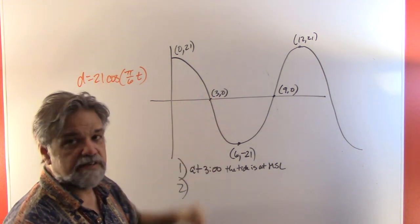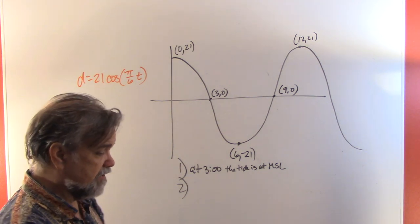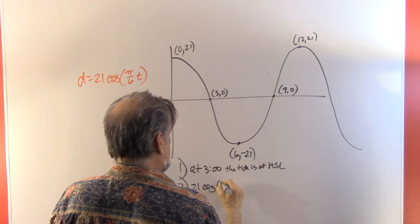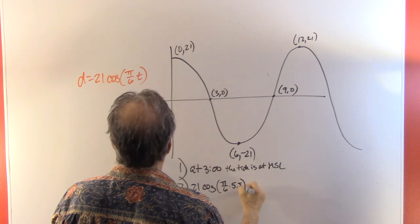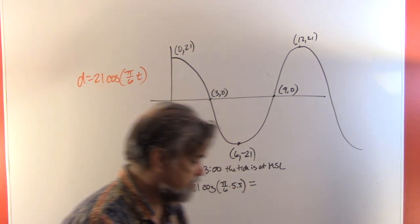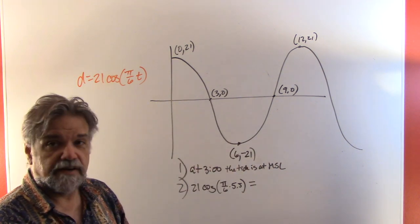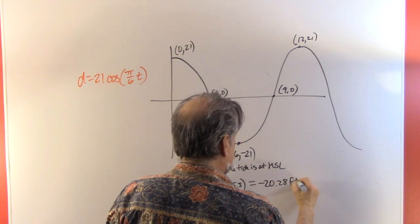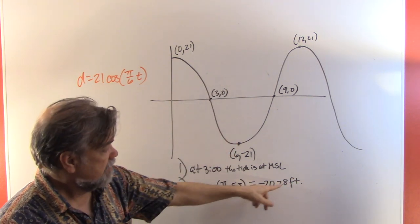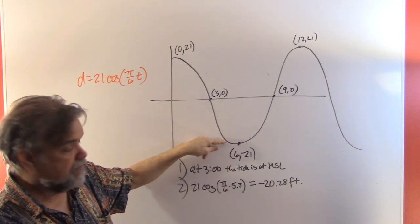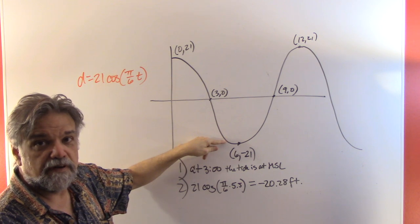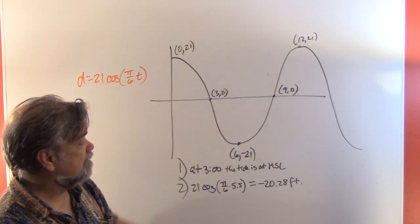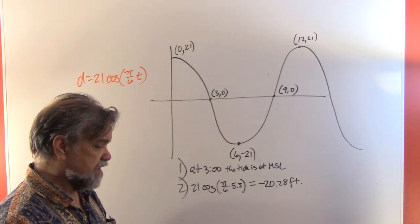For 5:30 p.m., t = 5.5. Plugging in: 21 × cos((π/6)(5.5)). Using a calculator, that gives approximately −20.28 feet — about three-quarters of a foot above the very lowest point, so very nearly at low tide.